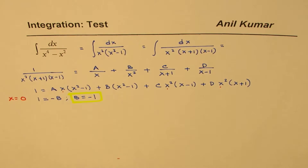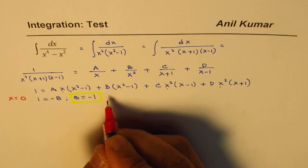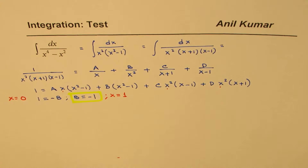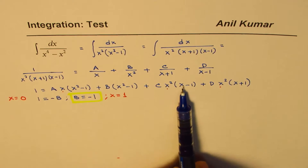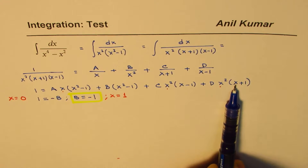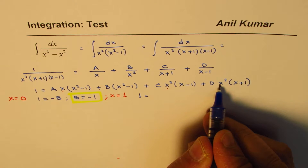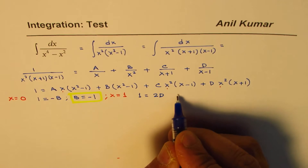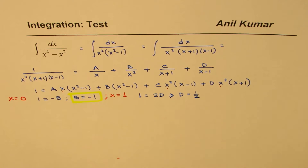Now substituting x equals positive 1 — in that case, the A, B, and C terms become 0. We get 1 equals D times 1 squared times (1 plus 1), which is 1 equals 2D. That gives d equals one half.